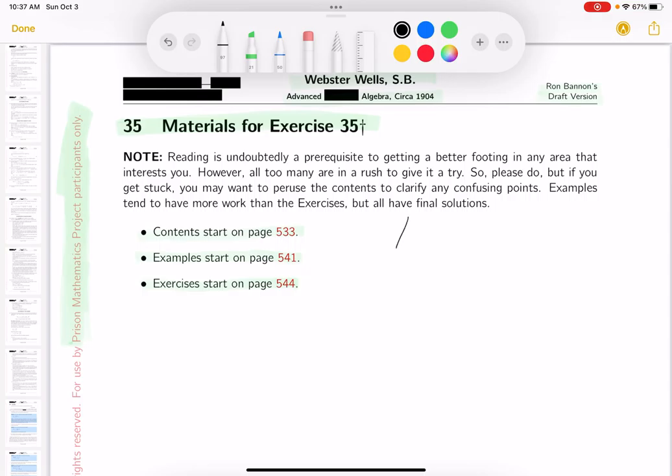My name is Ron Bannon. This is a draft version of Webster Wells' Advanced Course in Algebra, which dates back to 1904. This document was prepared for the Prison Mathematics Project participants only. In the future it will be published. And again, if you need to reach out to me for any reason, my name again is Bannon, and my email address is also Bannon. That's B as in boy, A, which is the at symbol, N-N-O-N dot U-S. Yes, I'm in the United States.